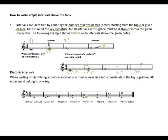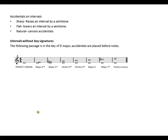Moving from D to A is a perfect fifth, which is diatonic since A is part of the D major scale. Moving from D to B is a major sixth, still diatonic. Moving from D to C sharp is a major seventh, still diatonic. Then D to D is a perfect octave. All these intervals are diatonic to the D major scale.